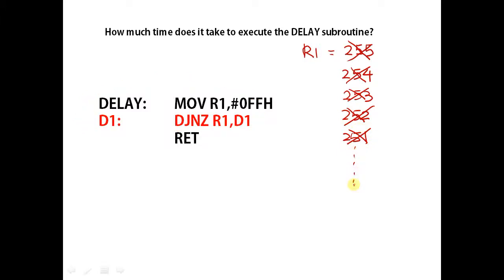After several cycles, the value of R1 becomes 1. The DJNZ instruction will be executed one last time. R1 will be decremented to zero. Since R1 is zero, the DJNZ instruction does not jump to D1. It will only jump to D1 if R1 is not equal to zero. The program continues to run the next instruction.